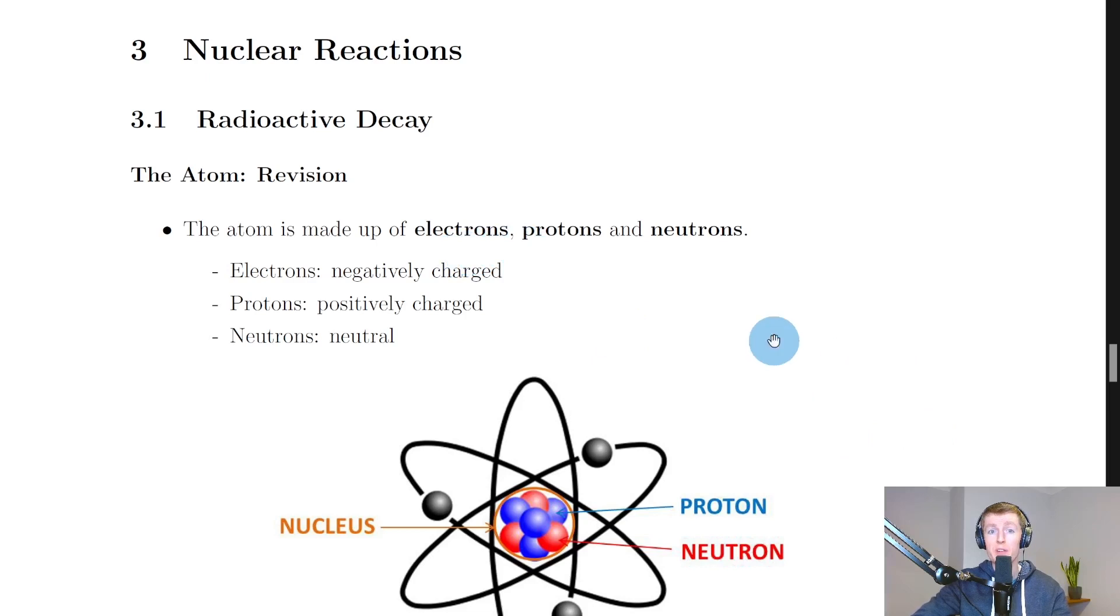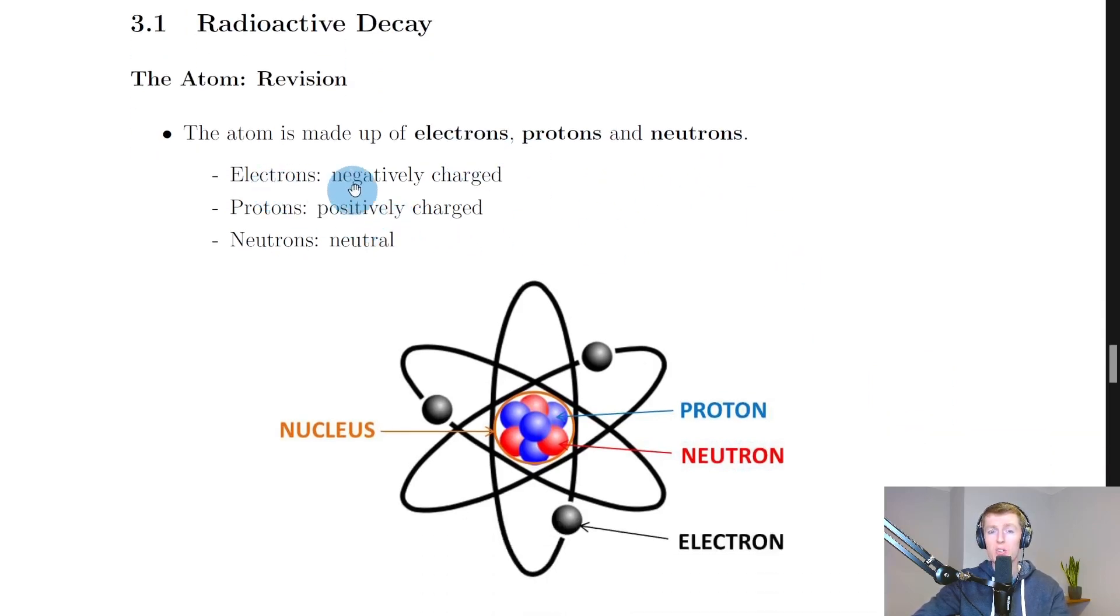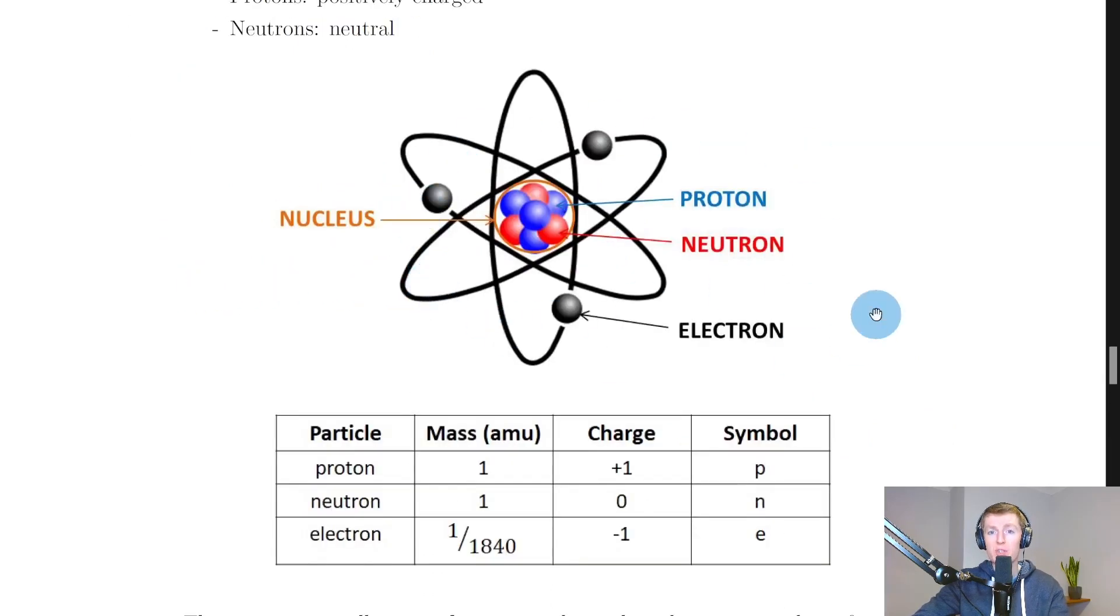You should remember that the atom is made up of the particles electrons, protons, and neutrons. You should know that electrons are negatively charged, protons are positively charged, and neutrons are neutral, and that the atom structure looks like this.